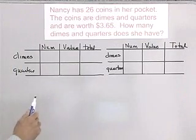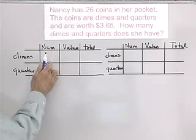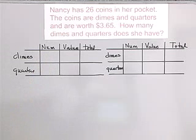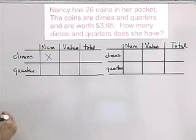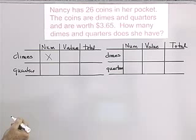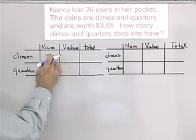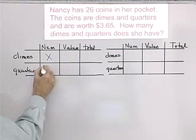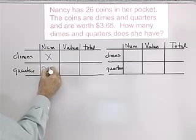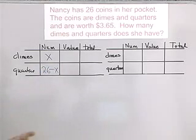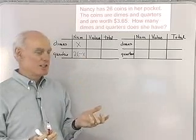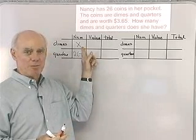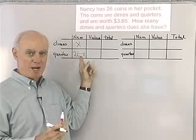In this table I have dimes and quarters, and I'm first going to fill in the number of each one that I have. I don't know how many of each one I have — that's what I'm trying to find out. So let's let X equal the number of dimes. Since there are 26 coins altogether and X of them are dimes, then 26 minus X is the number of quarters.